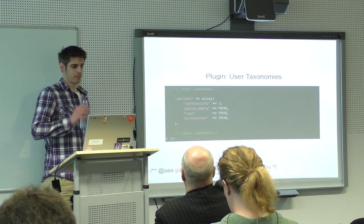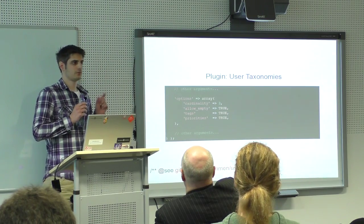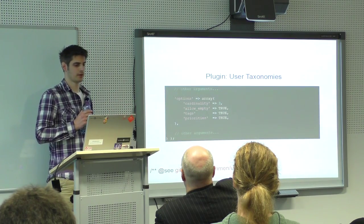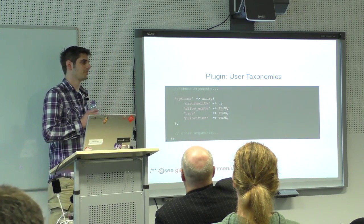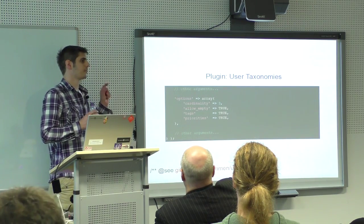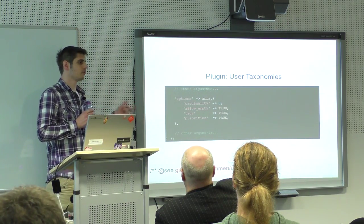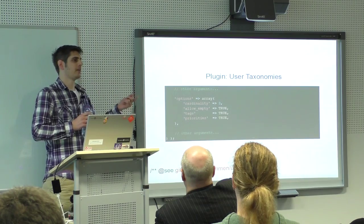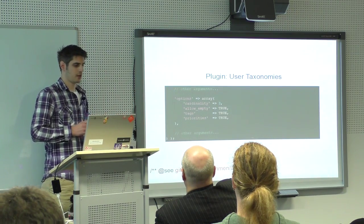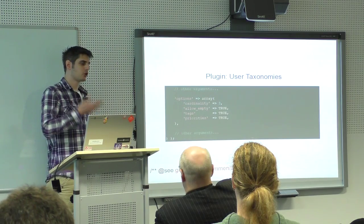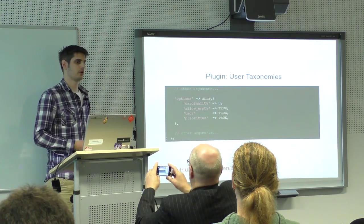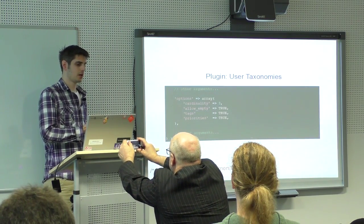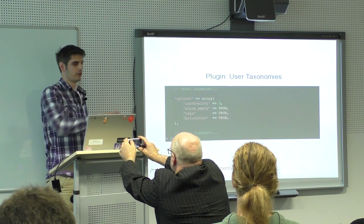You can also have priorities. Terms in general are just stored in the database as a relation between object ID and term taxonomy ID — you can't normally say which of the user's three skills is most important. But with this plugin it is possible. I'm storing the order of terms in user meta fields, so I can use three terms from a user taxonomy and say: this is the first, the second, and the third.